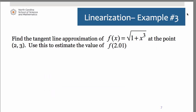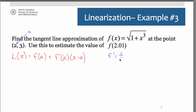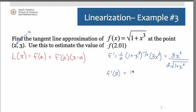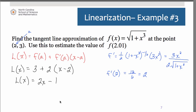In this last example, we find the linearization and then use it to estimate the value of the function at 2.01. Our a value is 2, so f(2) equals 3. Finding the derivative requires the chain rule, and evaluating at 2 gives 12 over 6, which simplifies to 2. Substituting into the linearization formula: L(x) equals 3 plus 2 times (x minus 2), which simplifies to 2x minus 1.